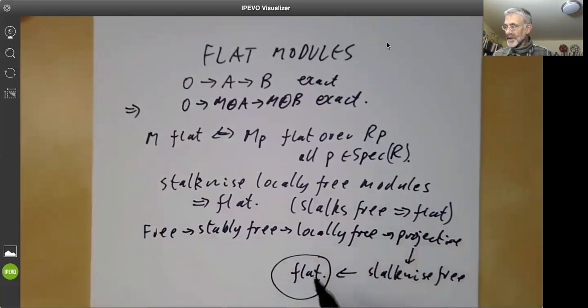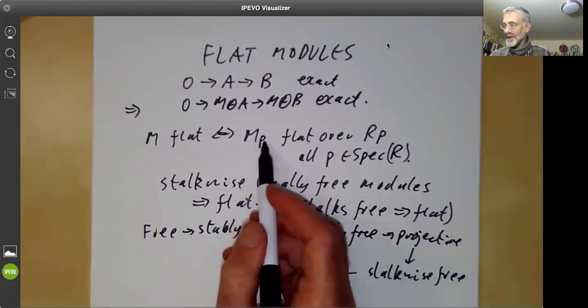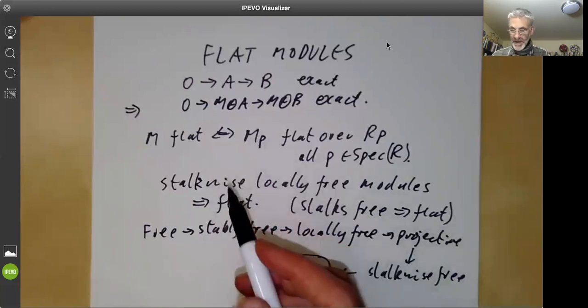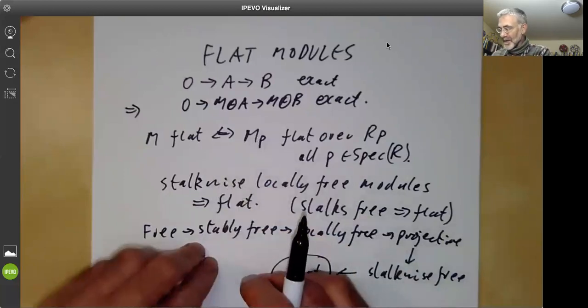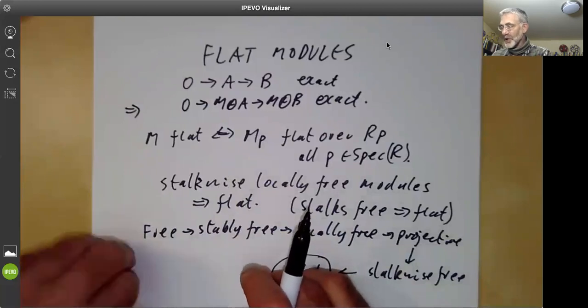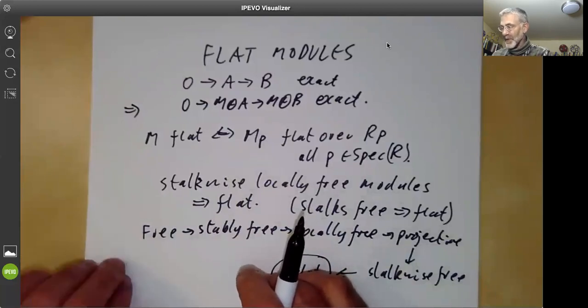This is because, first of all, it's easy to check that a module is flat because you just have to check it's flat at each prime. And we'll see a bit about how to do this. The other major advantage is there are huge numbers of examples of flat modules.